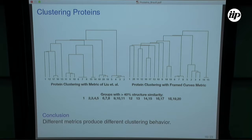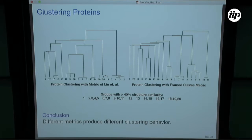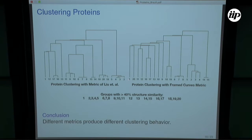I ran a small experiment picking 20 proteins from the PDB, knowing they fell into groups of structural similarity. Running clustering with their metric versus my metric, their clustering is tighter and picks up the groups exactly. My method also picks up essentially all the groups, but is more conservative — it groups things together only when they're very close structurally, potentially serving as a check against false positives. There are also interesting differences; for instance they cluster proteins 1 and 12 most closely while mine clusters 1 and 20. Choosing different Riemannian metrics on curve space, as expected, gives different clustering behavior.